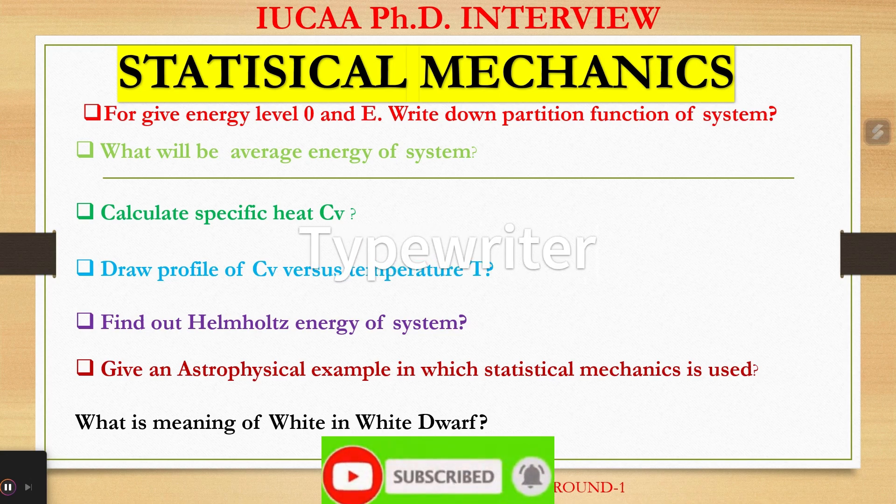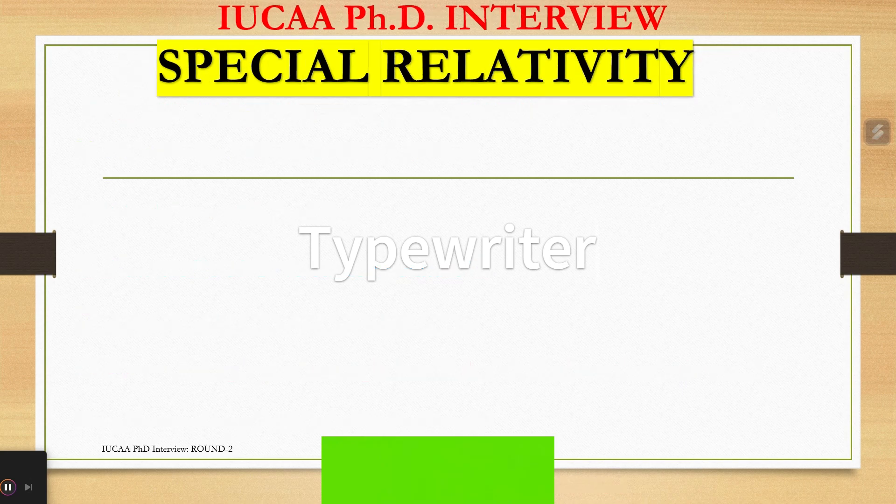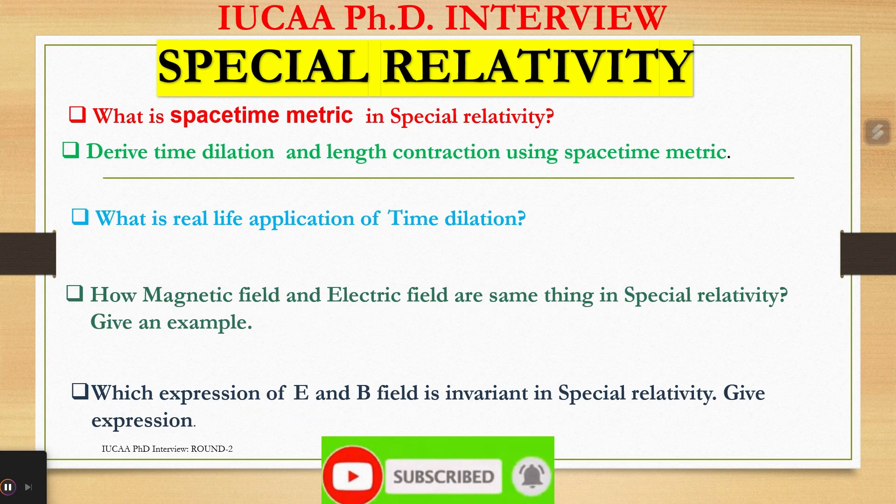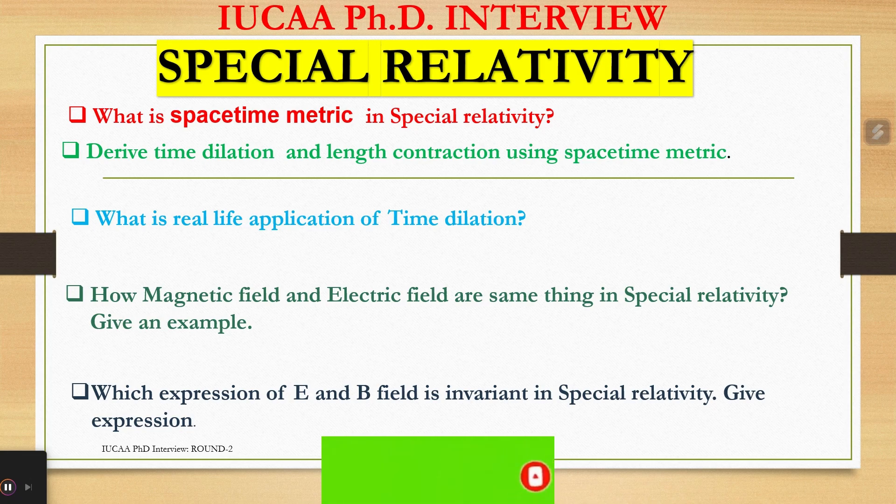Now this time questions were from Einstein's special theory of relativity. What is space-time metric in special relativity? Derive time dilation and length contraction using space-time metric. What is real-life application of time dilation? How are magnetic field and electric field the same thing in special relativity? Give an example. Which expression of E and B field is invariant in special relativity? Give expression.